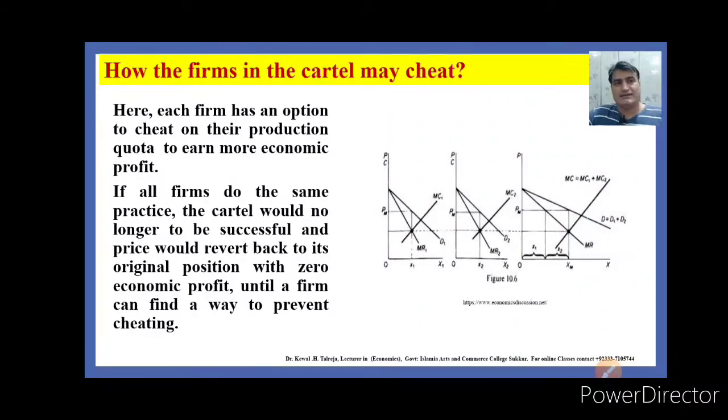For example, UFON, Mobilink, Talynor, Zong, and Warid are mobile SIM seller companies. Before they form a cartel, they are selling a SIM at 25 rupees per SIM. After entering into a cartel, the Mobilink firm decides that all firms shall sell their SIM at 100 rupees, suppose. This is the form of cartel. If all the firms infiltrate into the market and produce more quantity, then the firms will revert back to their original position and sell the SIM at 25 rupees. They will no longer earn economic profit if they cheat each other.